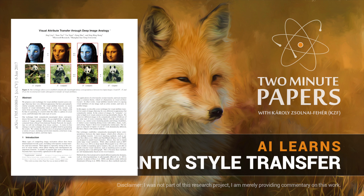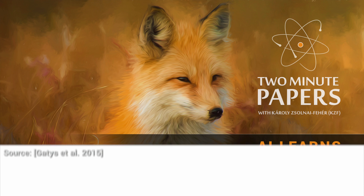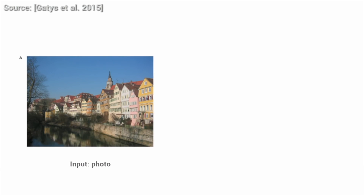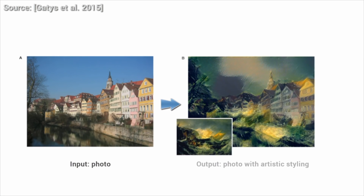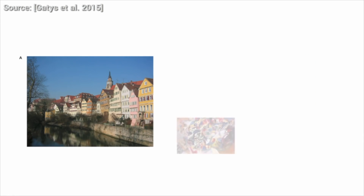Dear Fellow Scholars, this is Two Minute Papers with Károly Zsolnai-Fehér. Style transfer is an amazing area in machine learning and AI research, where we take two images. Image number one is an input photograph, and image number two is the desired style. And the output of this process is the content of image number one with the style of image number two.